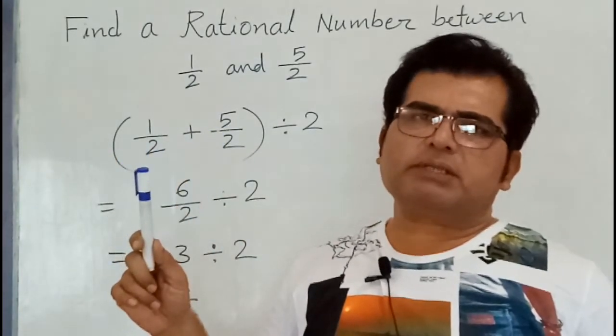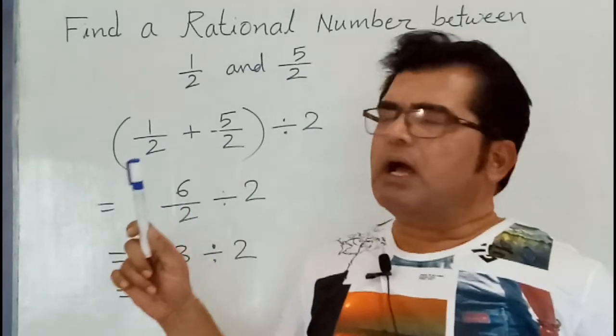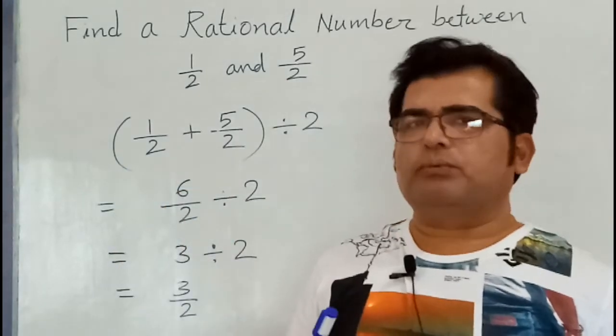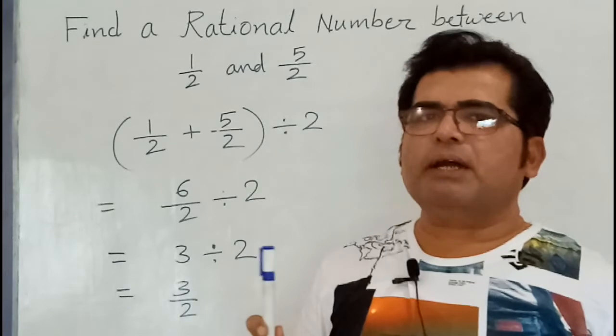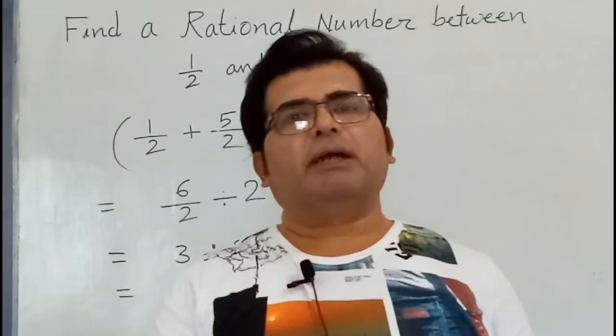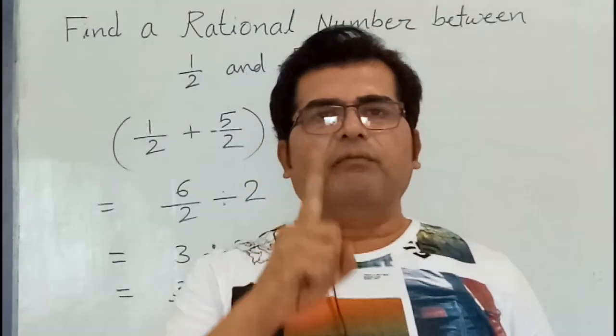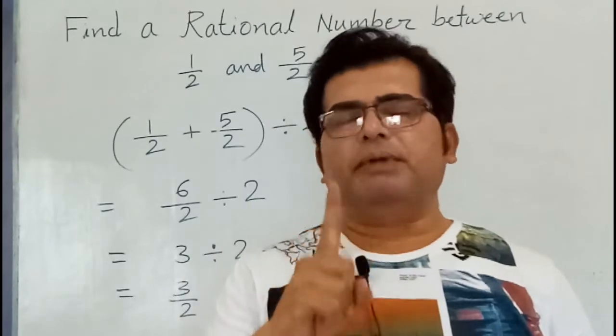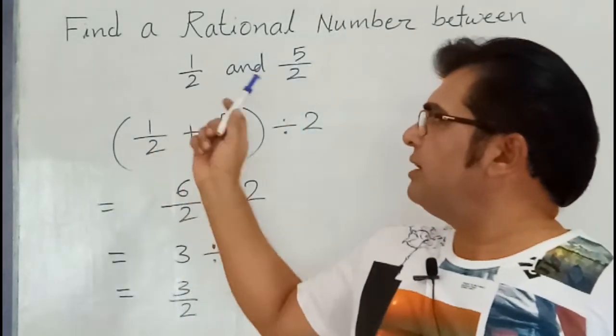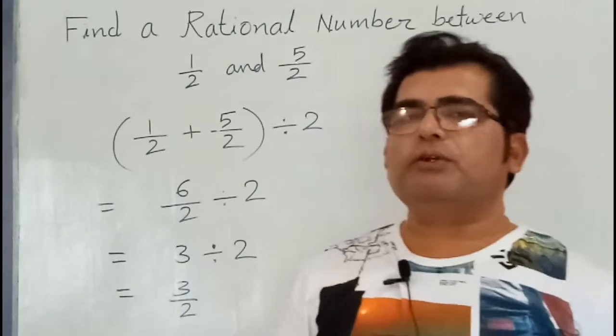Whatever may be the rational numbers, you add them and divide by 2. Then you will get exactly one rational number between them. So here we have 1 upon 2 and 5 upon 2 are two rational numbers.